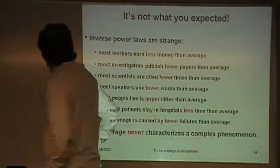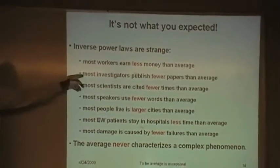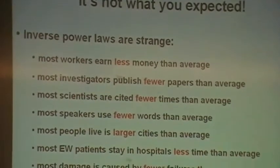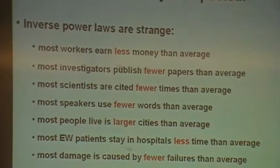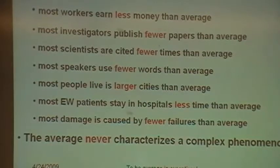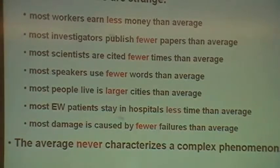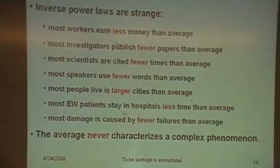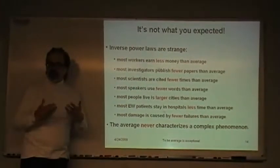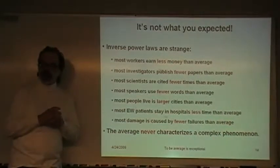And by that he meant that when you have these complex phenomena, you cannot take it out of their natural context to understand it. You have to understand it in the context in which you find the phenomenon. It didn't work particularly for sunlight. That turned out to be a bad example because sunlight is basically linear. There's the linear superposition of the different frequencies of the spectrum. But the principle was correct. The principle being that if you want to understand something like the human heart, you don't extract it from the person to understand it. You understand it while it's still beating, while it's alive, while it's in its natural setting. And that's looking at these systems with inverse power law distributions and not the normal distribution. So it's not what you expected. So, inverse power laws are strange because most workers earn less money than average. Most investigators publish fewer papers than average. Most scientists are cited fewer times than average. Most speakers use fewer words than average. Most people live in larger cities than average. Most emergency ward patients stay in hospitals less time than average. And most damage is caused by fewer failures than average. And you could sort of extend this list almost infinitely because the average never characterizes a complex phenomenon. And when you attempt to do that, which is done every day in the majority of science papers that are published, it's a mistake.